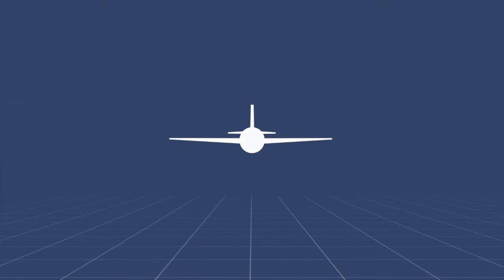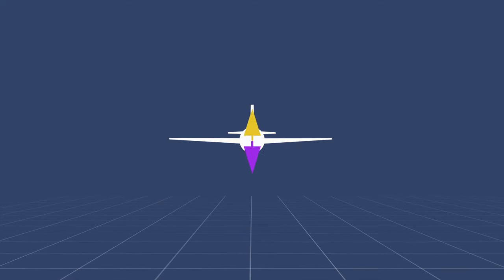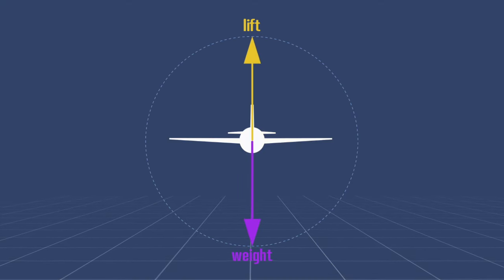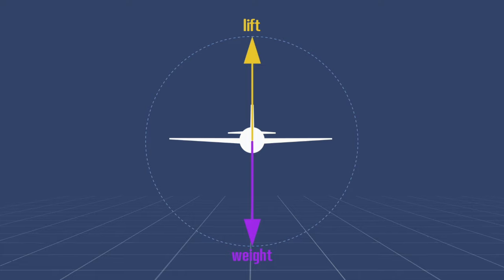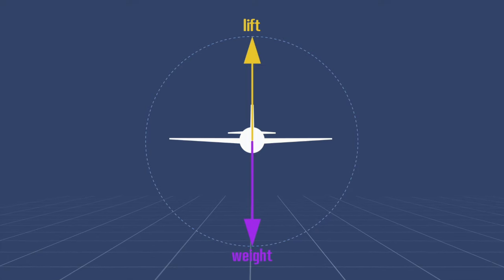In straight and level flight, the lift force generated by the wings acts perpendicular to the relative airflow and opposite to the weight force.